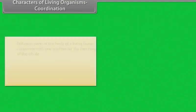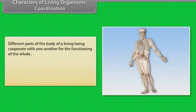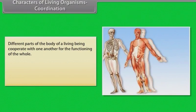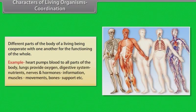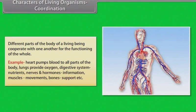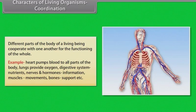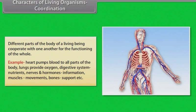Different parts of the body of a living being cooperate with one another for the functioning of the whole. For example, the heart pumps blood to all parts of the body; lungs provide oxygen; the digestive system provides nutrients; nerves and hormones carry information; muscles enable movements; and bones provide support.